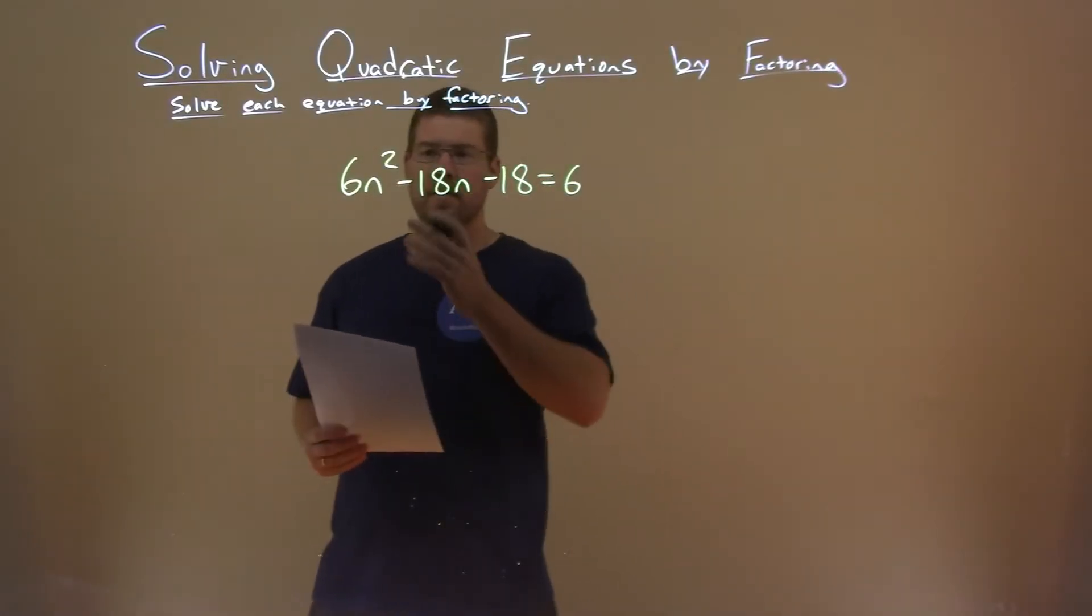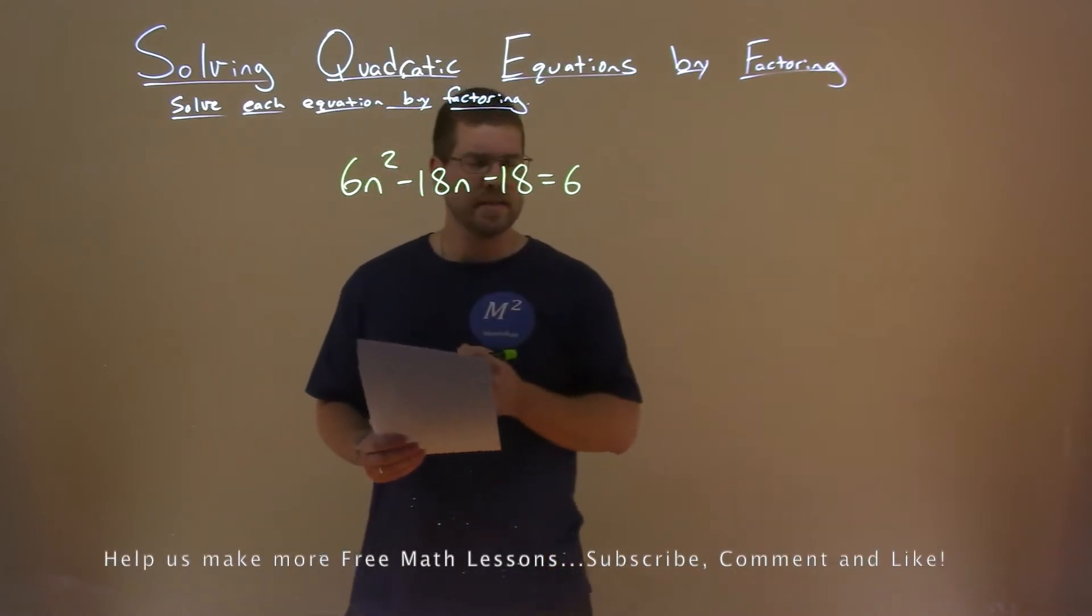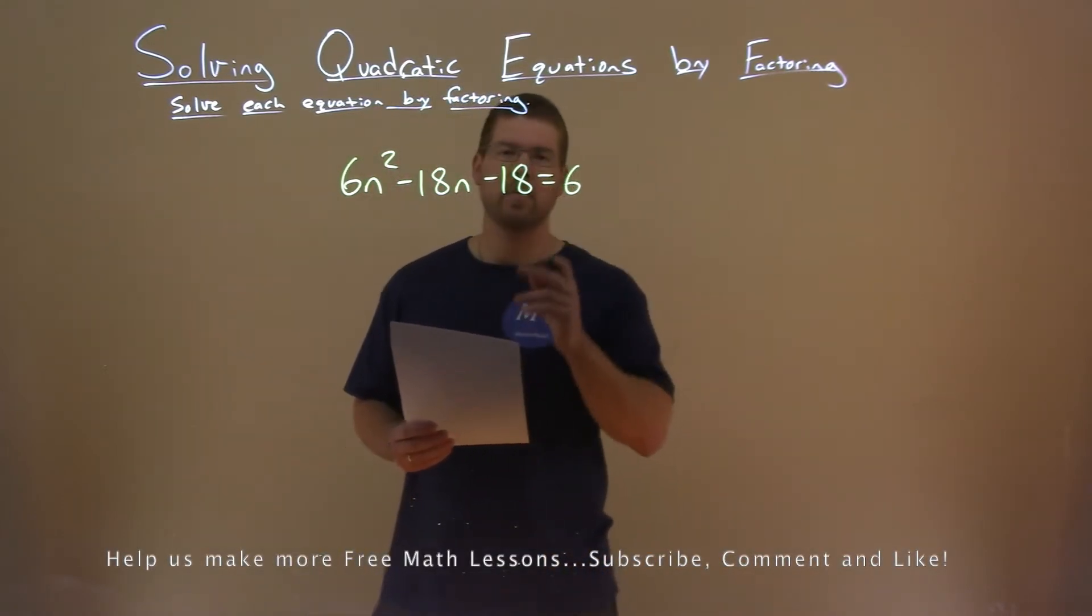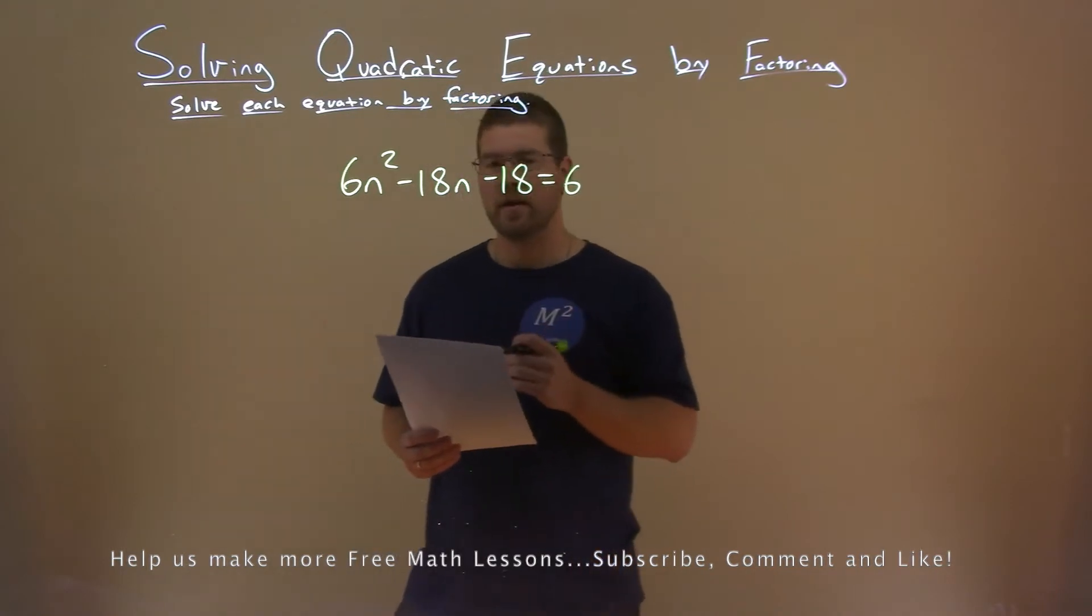We're given this problem right here, 6n squared minus 18n minus 18 equals 6, and we need to solve this by factoring.